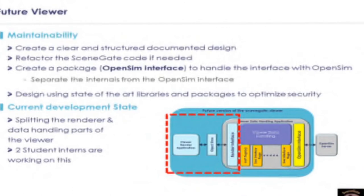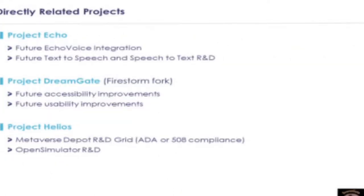One of the primary considerations involves maintainability. This includes establishing a clear, structured, and documented design, and will likely involve some refactoring of the existing SceneGate code base. A new package — seen in the diagram as OpenSim Interface — is needed to begin decoupling the renderer. Design goals also include the use of modern libraries and packages to optimize security. Two student interns are actively working on the decoupling. Natasha has been working on looking at security vulnerabilities.